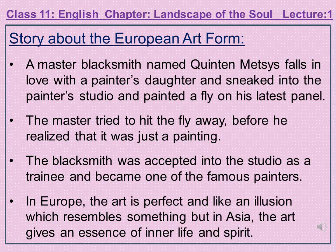These two stories illustrate what each form of art is trying to achieve: a perfect illusionistic likeness in Europe, and the essence of inner life and spirit in Asia. In this paragraph, there are words like Antwerp — a city of northern Belgium; delicate realism — the quality of art that makes it seem real; swat — to hit or crush something; apprentice — a trainee or learner; and illusionistic likeness — an illusion created which resembles something.